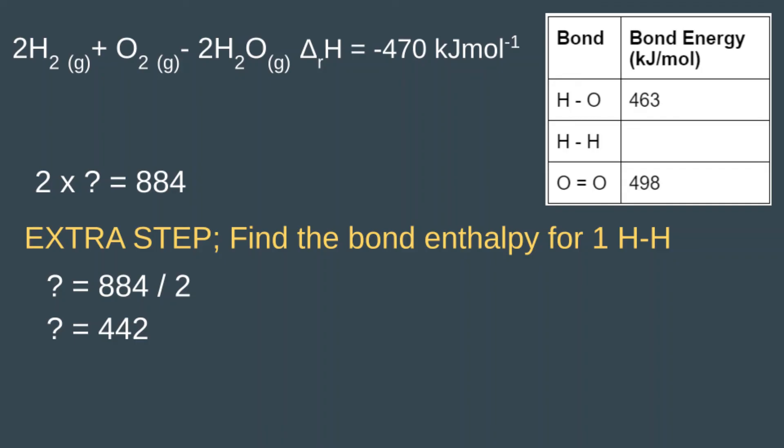Essentially what we've done is divide both sides of the equation by 2. Question mark times 2 divided by 2 gives you question mark, and we have to divide the right-hand side by 2 as well. So question mark equals 884 divided by 2.